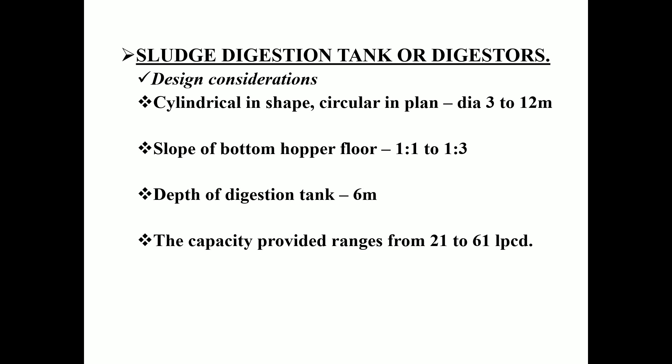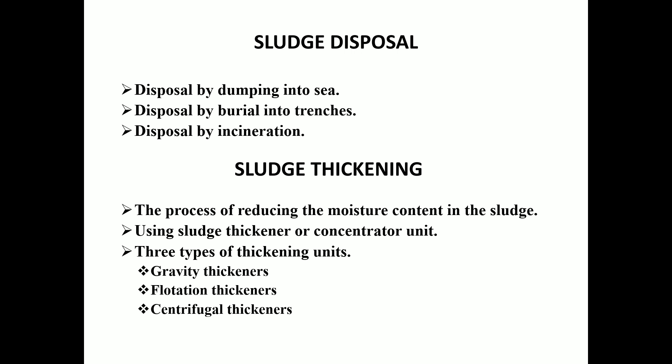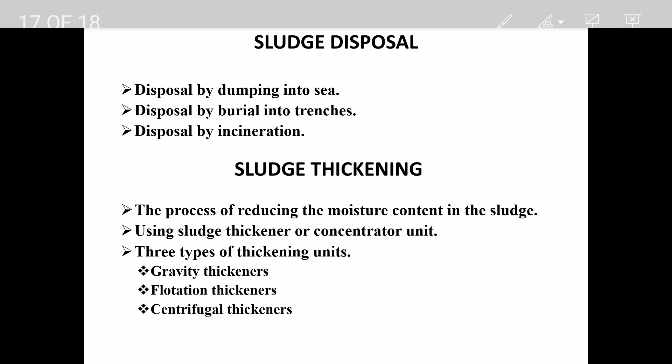Regarding construction and design details: the tank is usually cylindrical in shape, circular in plan, with a diameter of 3 to 12 meters. The floor slope is 1.1 to 1.3. The digestion tank depth is about 6 meters. Capacity is usually provided at 1.2 LPCD. After digestion, the water content is reduced through sludge thickening, also called a concentrator unit, using gravity, flotation, or centrifugal techniques.